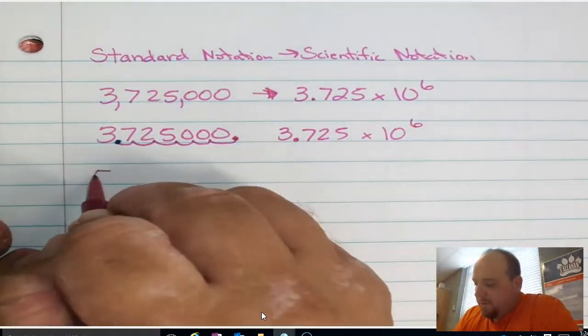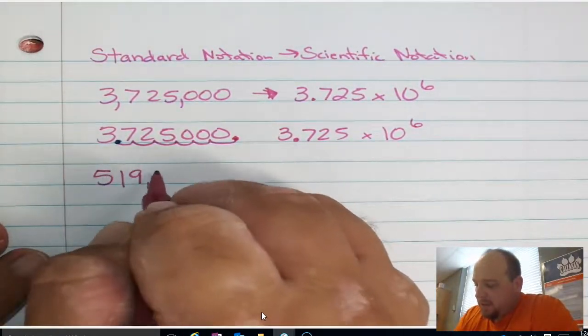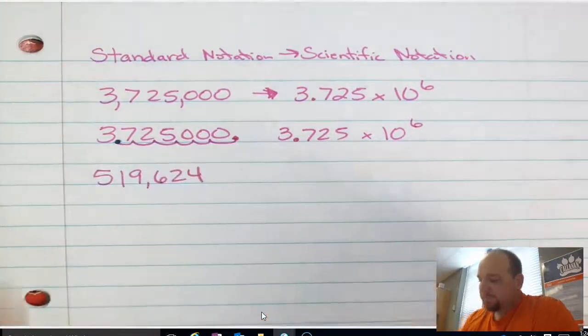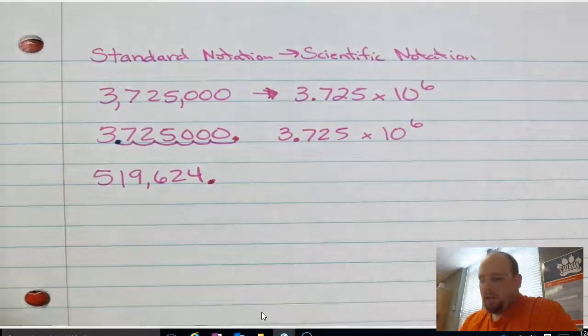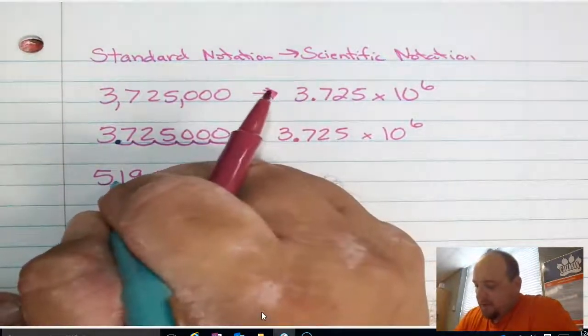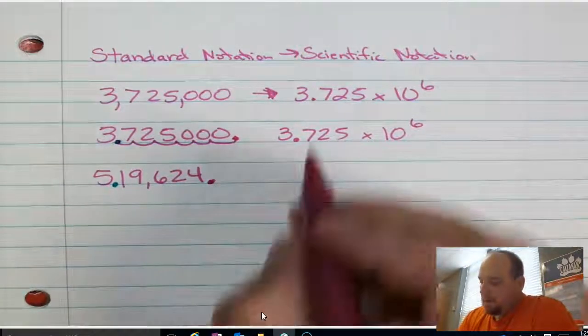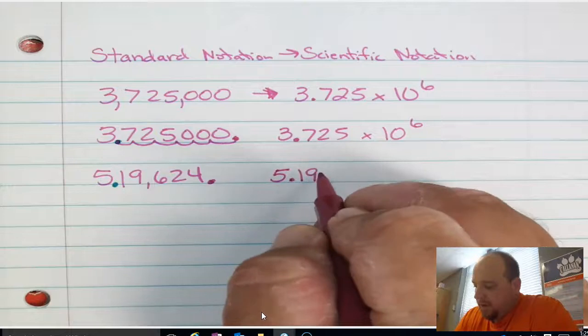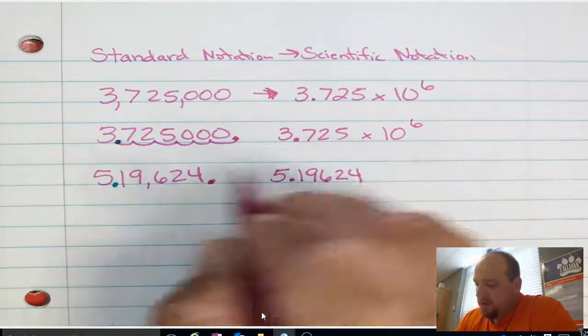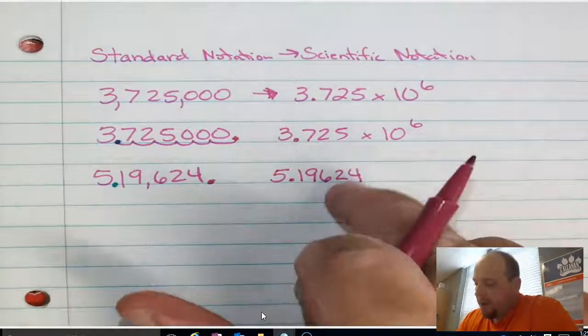So let me show you with another one. Let's go with 519,624. Right now, the decimal is located right here behind the 4. Where can I place the decimal so I have a factor between 1 and 10? Right here between the 5 and the 1. So I'm going to rewrite that factor, 5.19624. Notice I did not have any zeros I needed to drop off when I rewrote that.